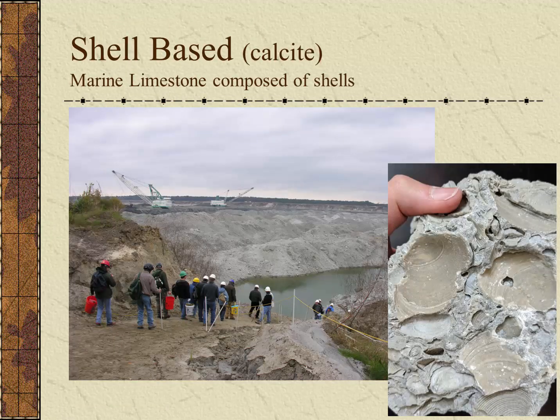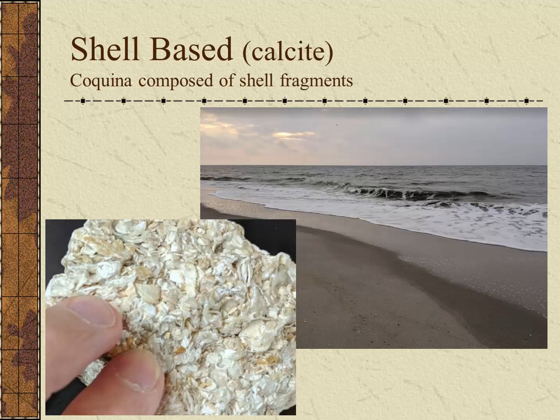The shell-based organic sedimentary rocks are often made of the mineral calcite. Here's a fine example of marine limestone from Aurora, North Carolina, from the Castle Hayne Formation. We can clearly see the excellent preservation of clamshells in this marine limestone. Another common shell-based rock, coquina, is made of cemented shell fragments. It's fairly common to find coquina on the beach — this sample comes from Emerald Isle, North Carolina.